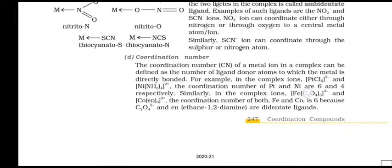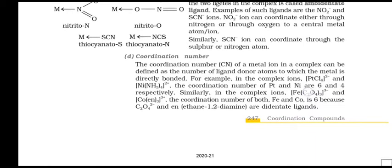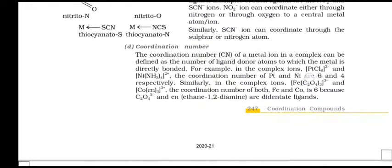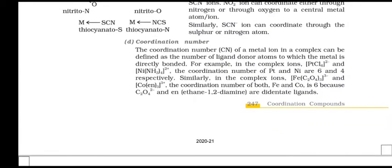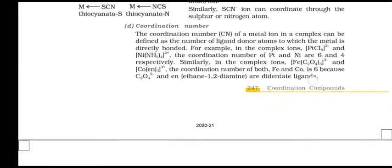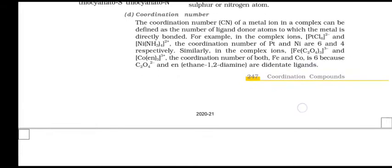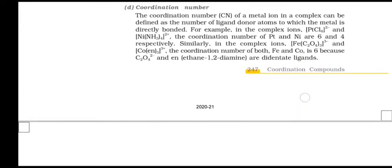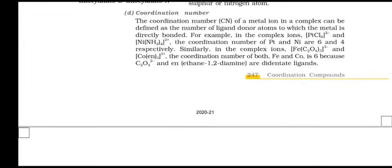A ligand which has two different donor atoms and can coordinate through either of the two is called an ambidentate ligand. Examples of such ligands are NO2- and SCN- ions. NO2- ion can coordinate either through nitrogen or through oxygen to a central metal atom or ion. Similarly, SCN- ion can coordinate through the sulfur or nitrogen atom. The coordination number of a metal ion in a complex can be defined as the number of ligand donor atoms to which the metal is directly bonded.